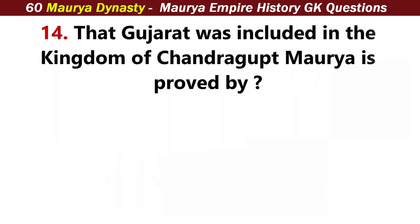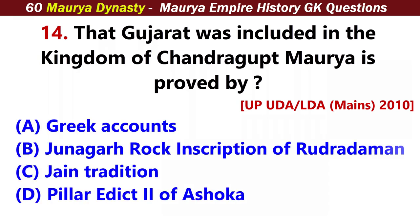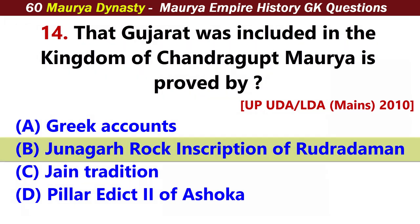That Gujarat was included in the kingdom of Chandragupta Maurya is proved by? Answer B: Junagadh rock inscription of Rudradaman.